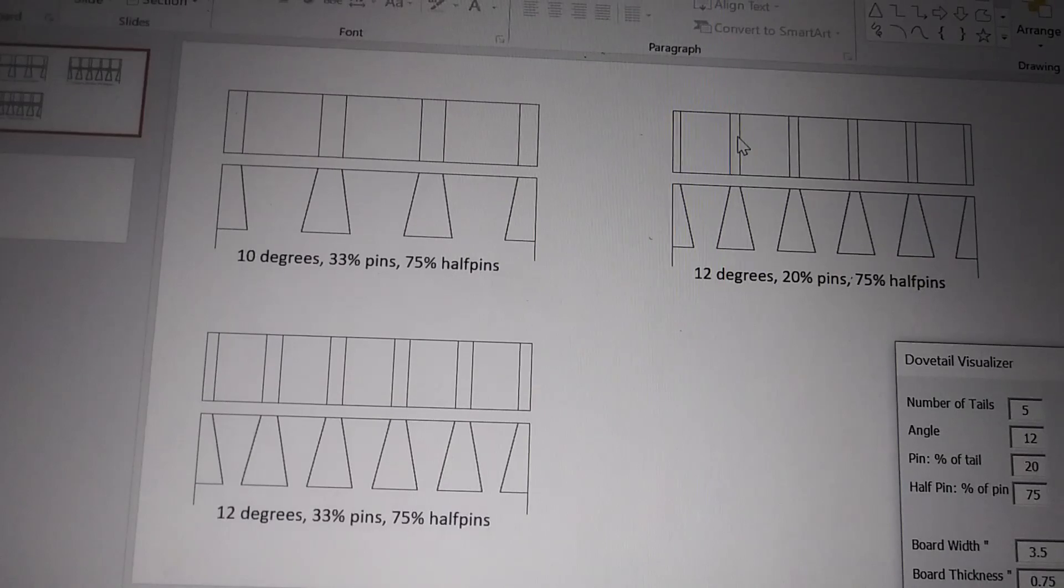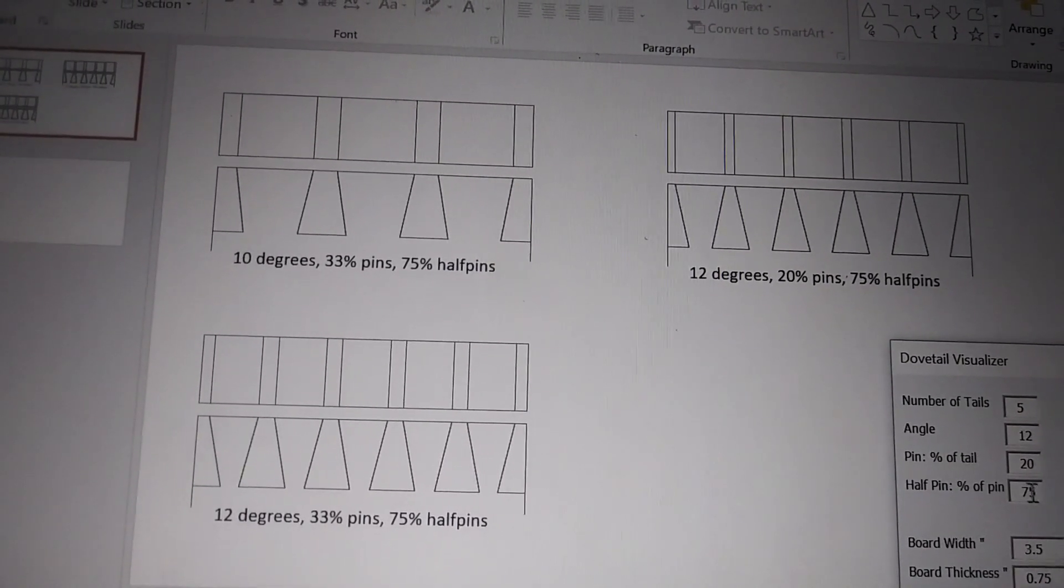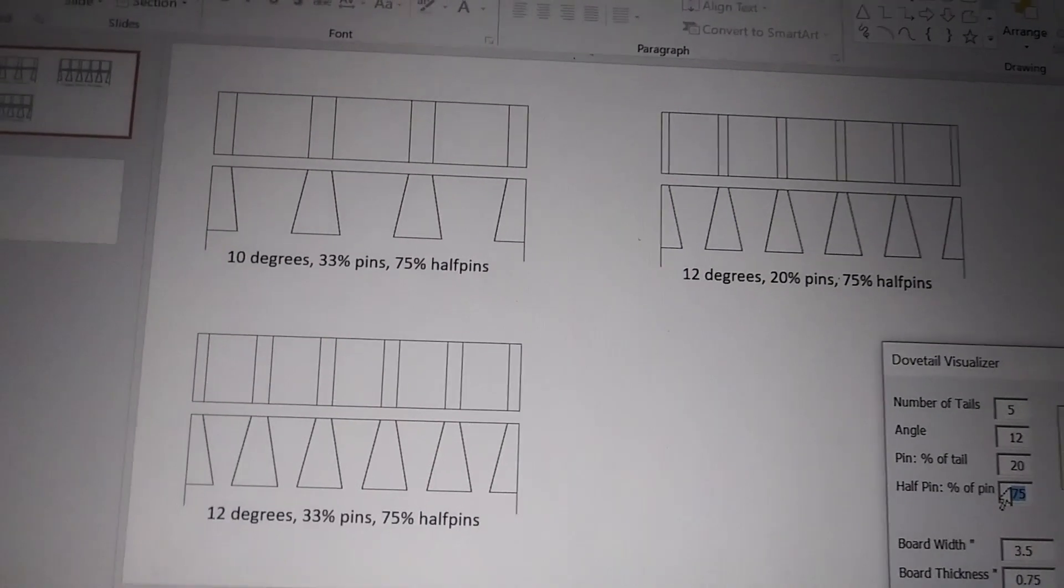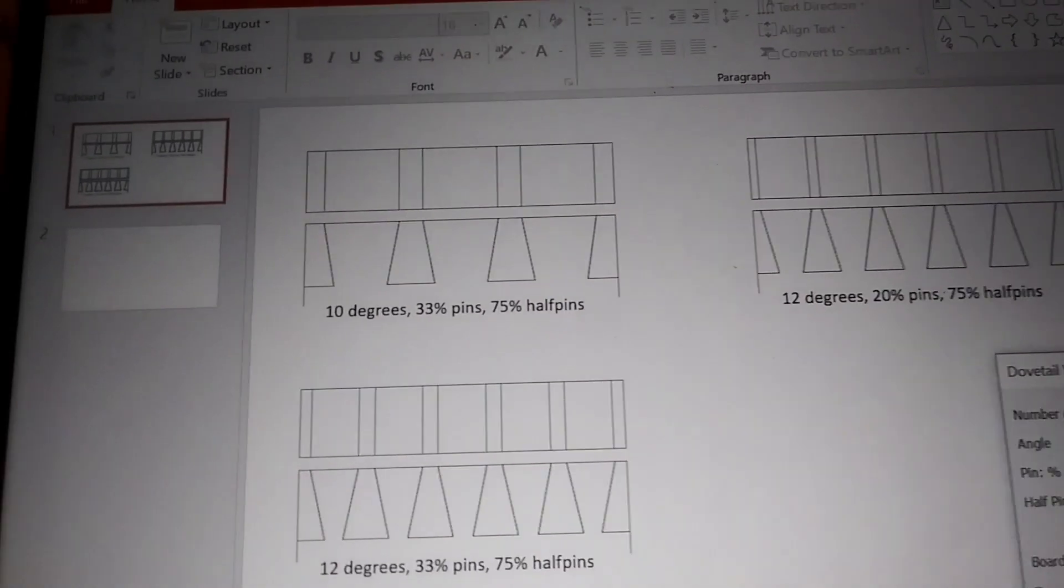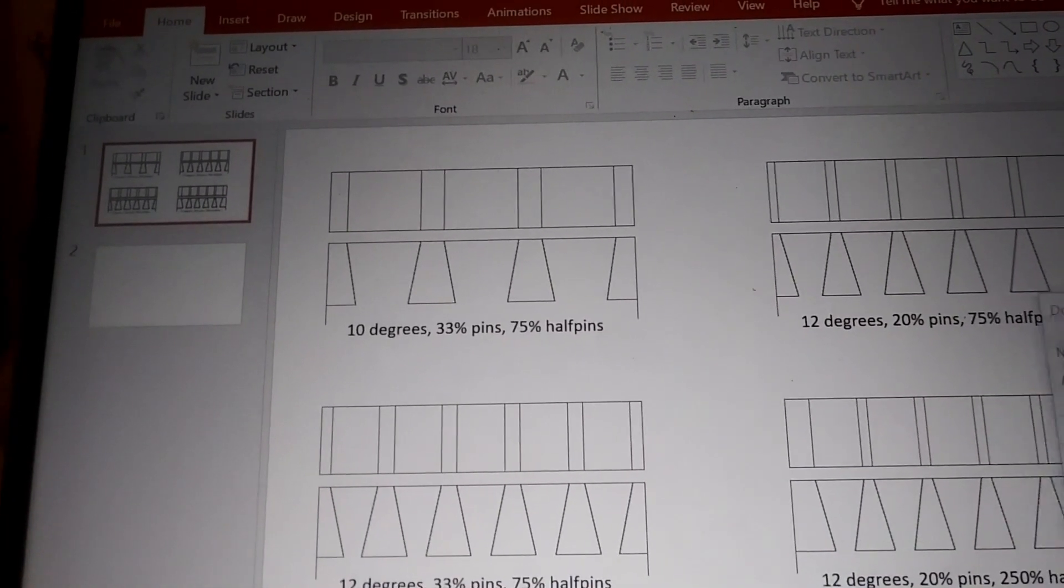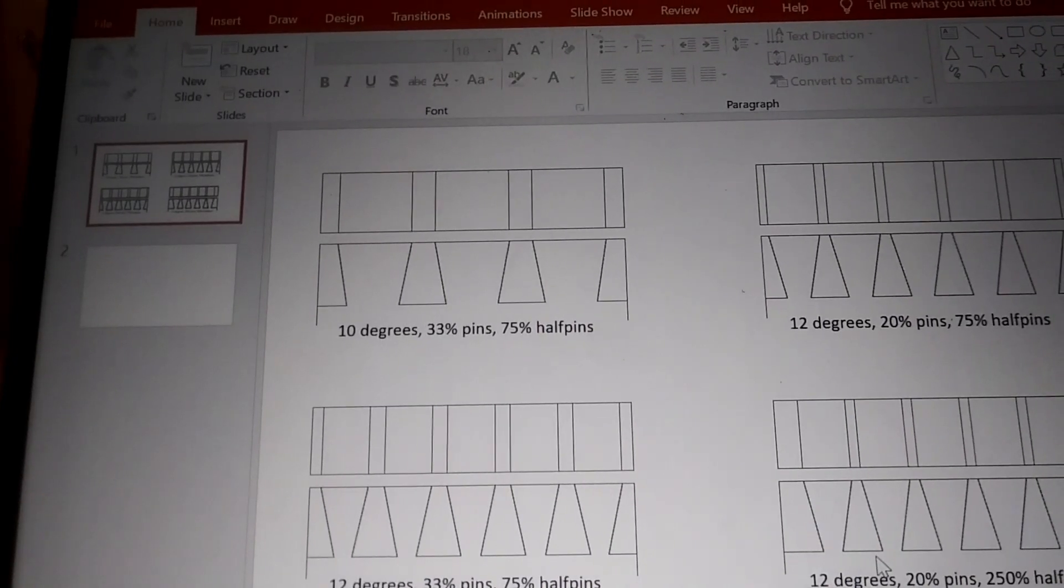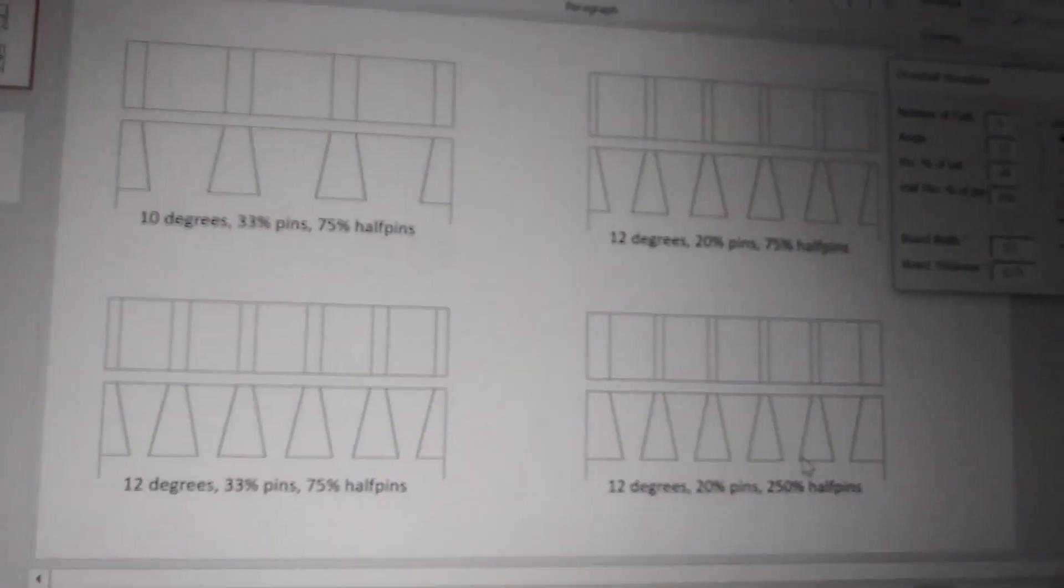And make it very small on this ends, but my half pins are too small looking. So let's say I wanted them to be two and a half times bigger, something like that. Maybe ah, now we're getting to what I want, something like that. So I could print this out and then take it to the shop.